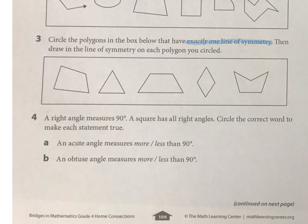For example, this equilateral triangle has a line of symmetry there, and it has a line of symmetry there, and a line of symmetry there — so you would not circle that one.